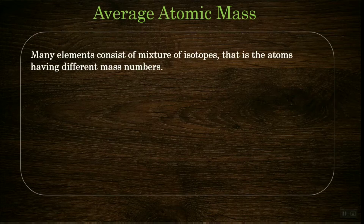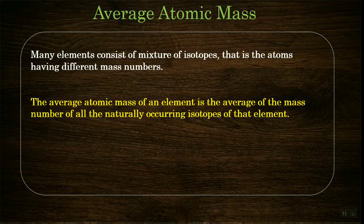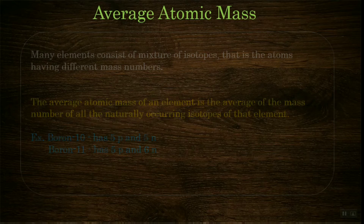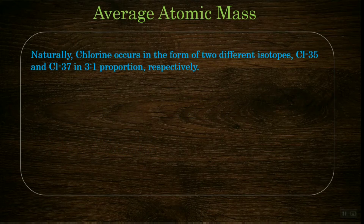Regarding average atomic mass: many elements consist of a mixture of isotopes, meaning atoms with different mass numbers. The average atomic mass of an element is the average of the mass numbers of all naturally occurring isotopes. For example, chlorine naturally occurs as two isotopes: Cl-35 and Cl-37, in a proportion of 3:1 respectively.